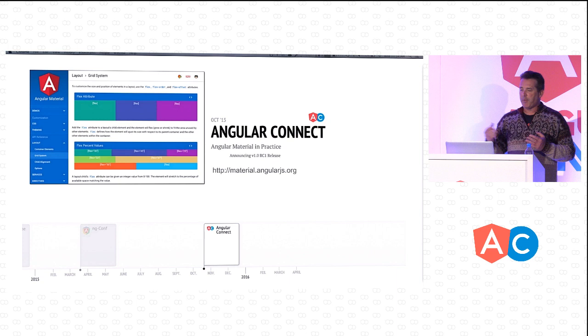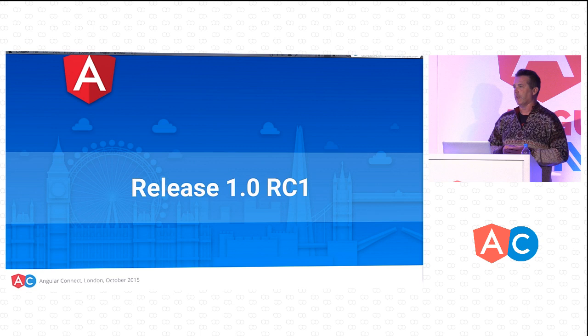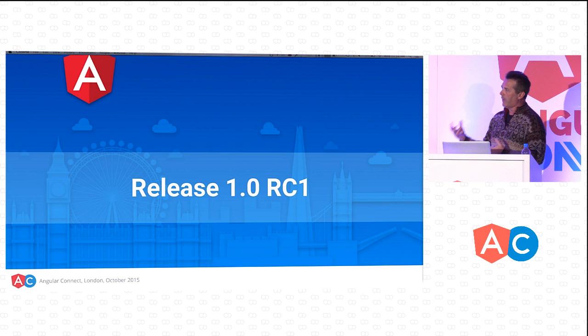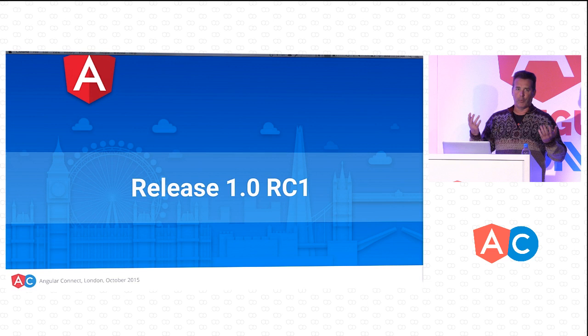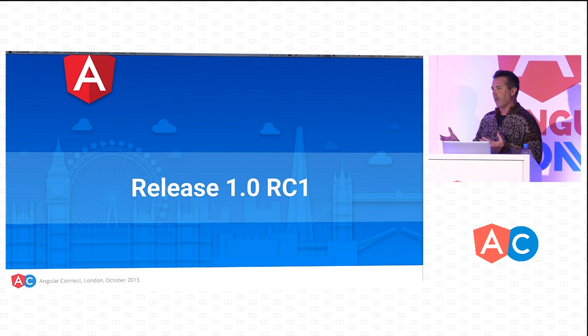Now I'm here in London representing the Angular Material team, and we're proud to say that today we have our first release candidate for 1.0. What this means is you can rely on our current release of Angular Material components and our APIs. If we break things, that's a bug. We're ready for confirmation that we've got it right — we still have some polish to do, but we feel confident we're very close, and we need your help to confirm that.